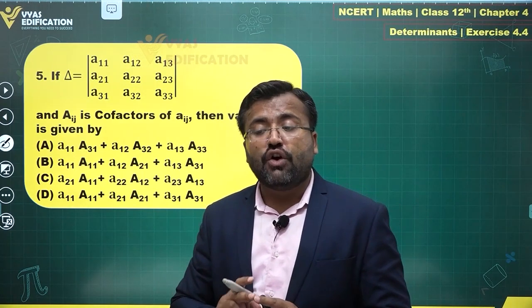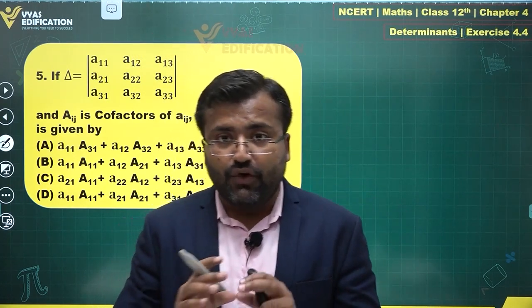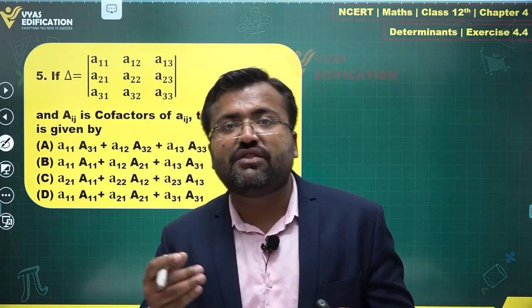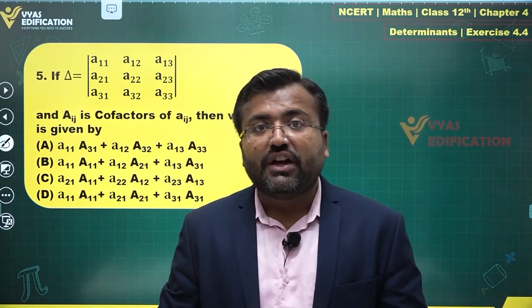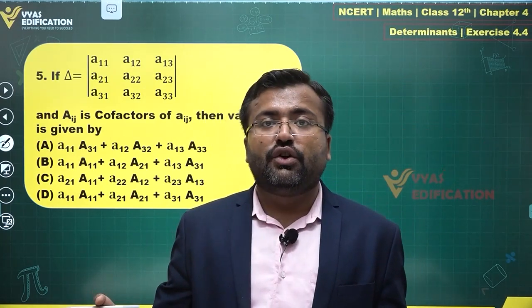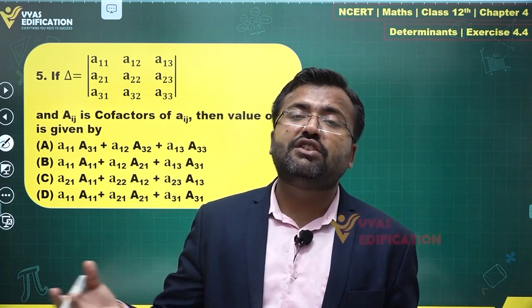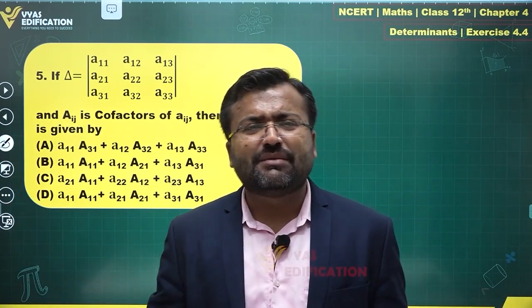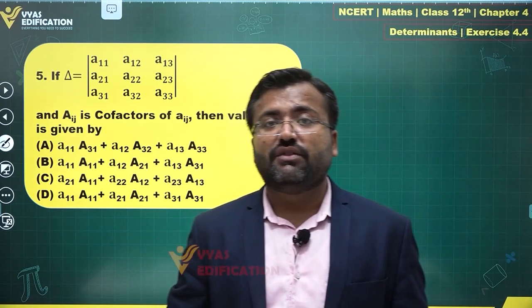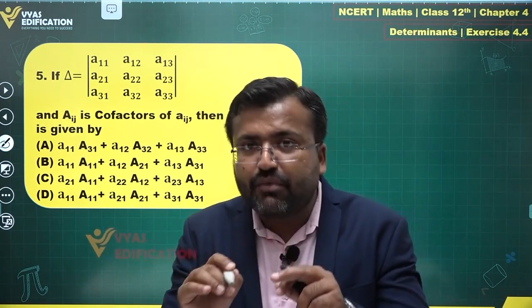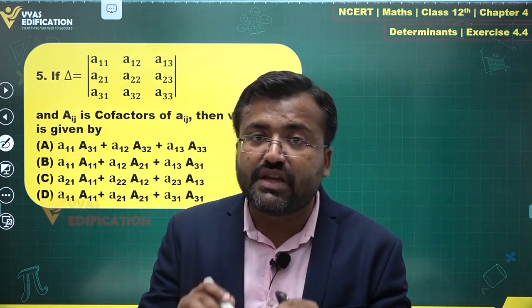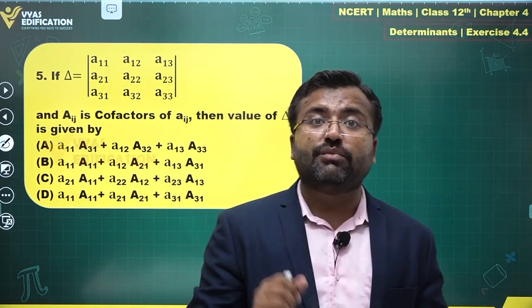Corresponding cofactors are important. If you choose cofactors of any other row for elements of a row, the value will be zero. If you choose cofactors of one row and elements of another column, you'll get something random. But if elements of the same row and cofactors of the same row are multiplied together and added, the value of the determinant is obtained.